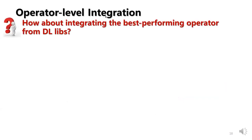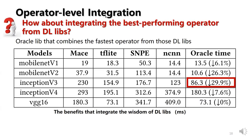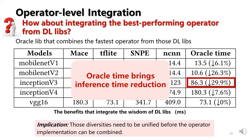Regarding integrating the best-performing operators from different libraries, we established an Oracle lab that combines the fastest operators from across libraries. By combining operators from different libraries, we can achieve 0 to about 30% inference time reduction across different models. As different libraries have different implementation approaches, interfaces need to be unified before operators can be combined.